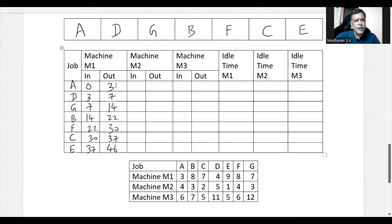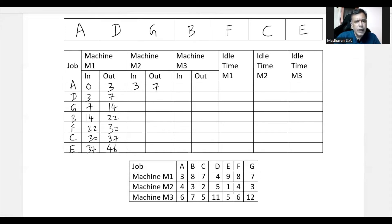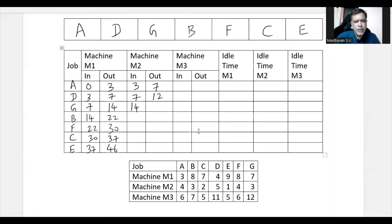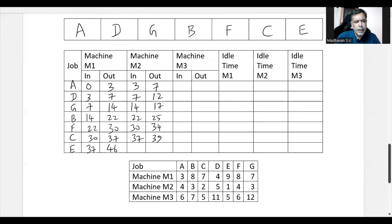For machine two, each job can only start after it finishes on machine one. A: starts at 3, out at 7. D: starts at 7, out at 12. G: starts at 14 (waits for M1), out at 17. B: starts at 22, out at 25. F: starts at 30, out at 34. C: starts at 37, out at 39. E: starts at 46, out at 47.